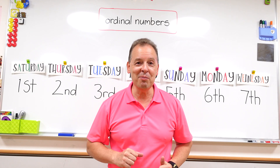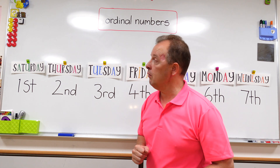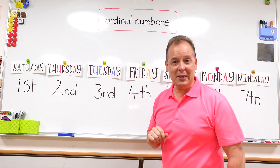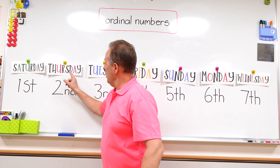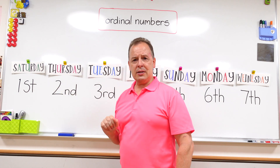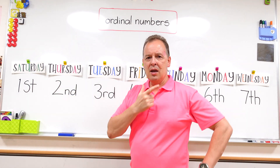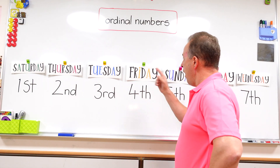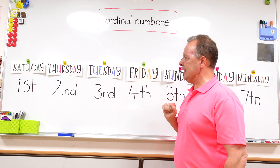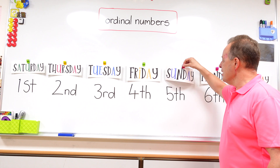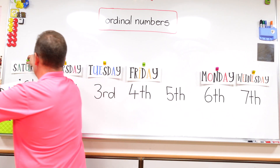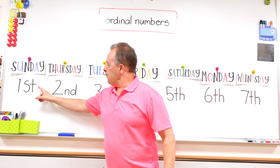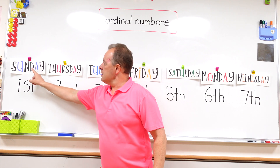Everyone, look behind me. We have another example of how to use ordinal numbers — days of the week. Do you remember the days of the week song? This is not Sunday, this is Saturday. Can you tell me what the first day of the week is? Sunday! Sunday is the first day of the week. We'll put Saturday over here. So the first day of the week is Sunday.